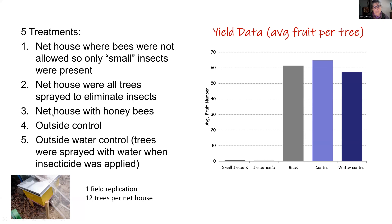We also had an outside control and an outside water control — since Gary Bender had suggested that water misting might enhance fruit set. We collected yield data from 12 trees per net house. The results showed virtually no fruit in the small-insects-only or insecticide net houses, and there was no statistical difference between the net house with bees, the outside control, and the water control.